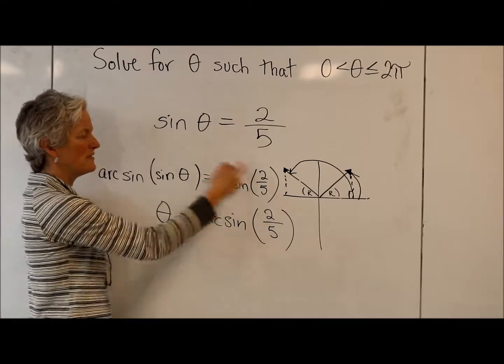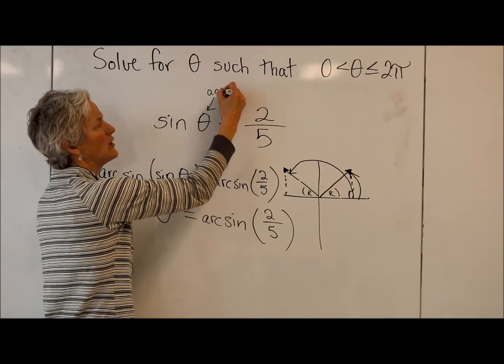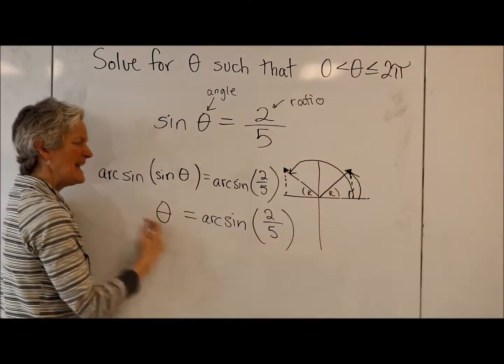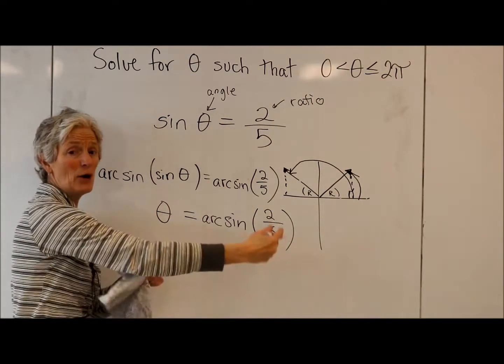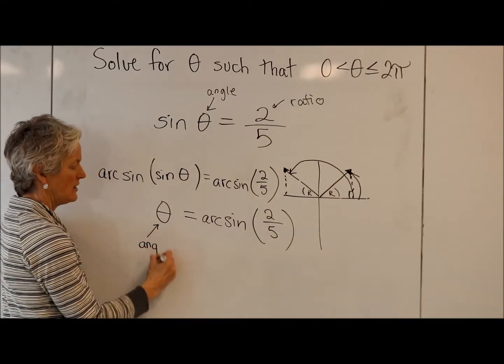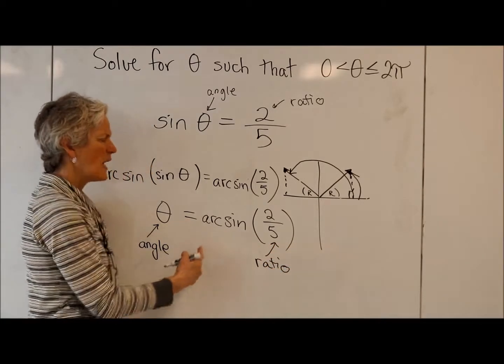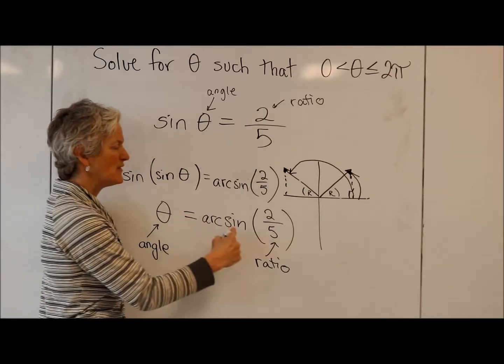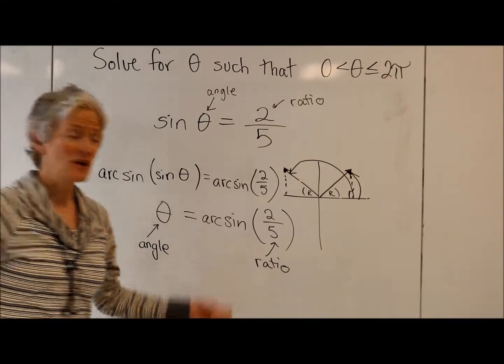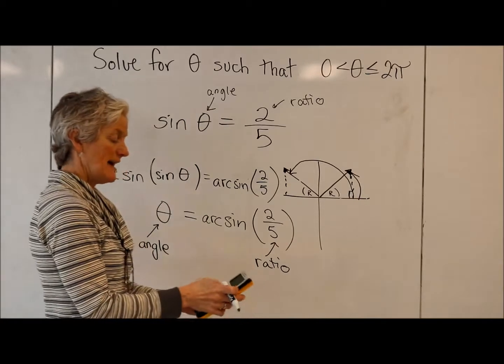Now you don't have to go through this step. You can just say, in my original function, that's my angle and this is my ratio. So in my inverse, the input becomes the output and the output becomes the input. So my output is my angle and my input is my ratio. I'm saying, what angle or angles have a sine of 2 fifths?